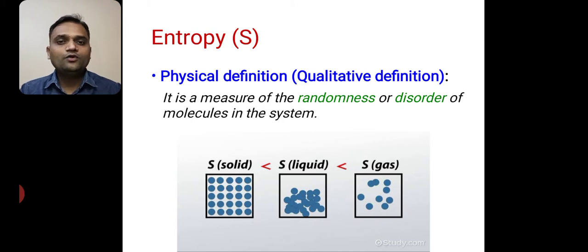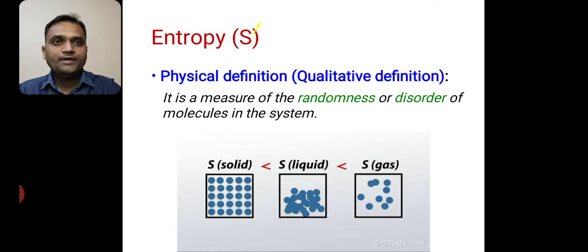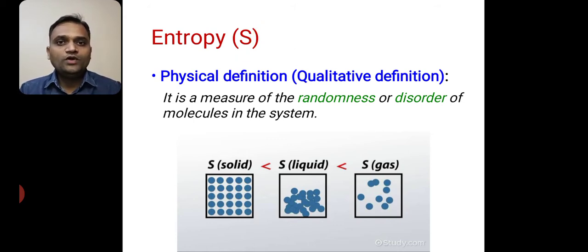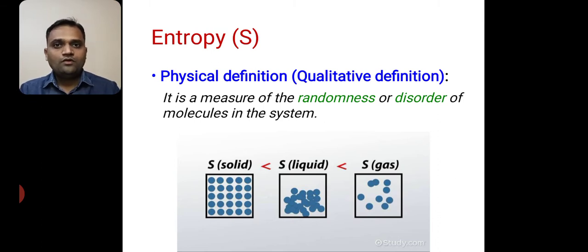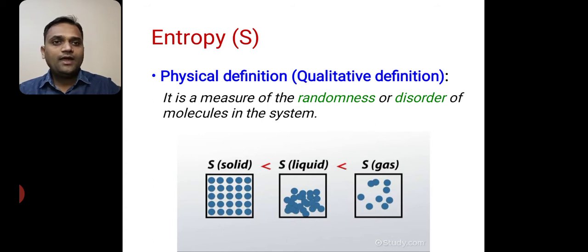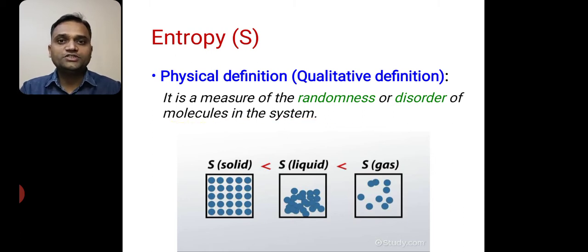We all know that entropy is denoted by capital S. There are two definitions of entropy. First one is the physical definition, which is also called the qualitative definition. The physical definition of entropy is: it is a measure of the randomness or disorder of molecules in the system.